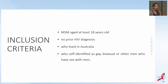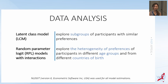Inclusion criteria included men who have sex with men who were at least 18 years old, had no prior HIV diagnosis, lived in Australia, and self-identified as gay, bisexual, or other men who have sex with men. In this analysis, we used a latent class model to explore subgroups of participants with similar preferences, and we also used random parameter logit models with interactions to explore heterogeneity of preferences for participants in different age groups and from different countries of birth.